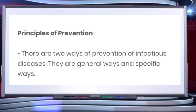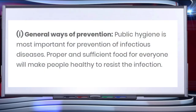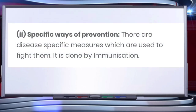Now let's talk about the principles of prevention. There are two ways of prevention of infectious diseases: general ways and specific ways. The general ways mostly relate to preventing exposure. Public hygiene is the most important for prevention of infectious diseases. Proper and sufficient food for everyone will make people healthy enough to resist infection.